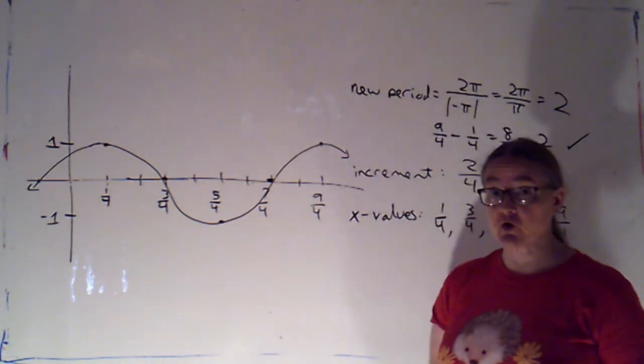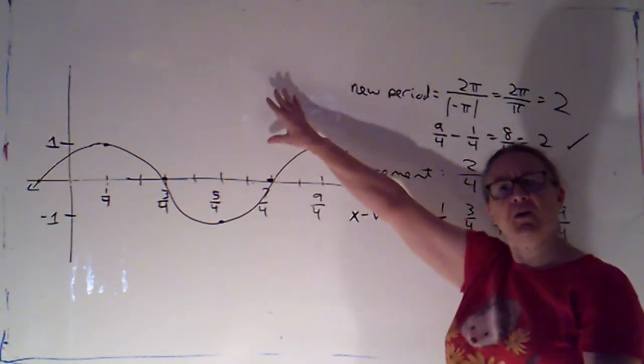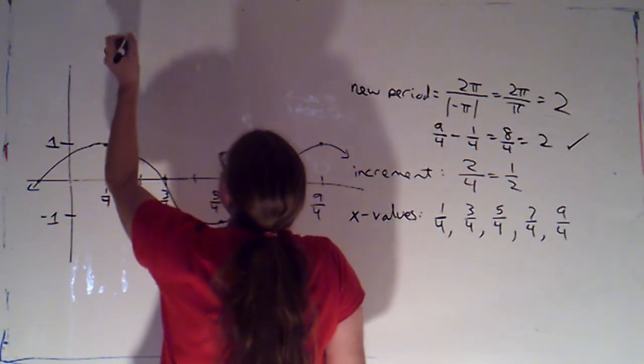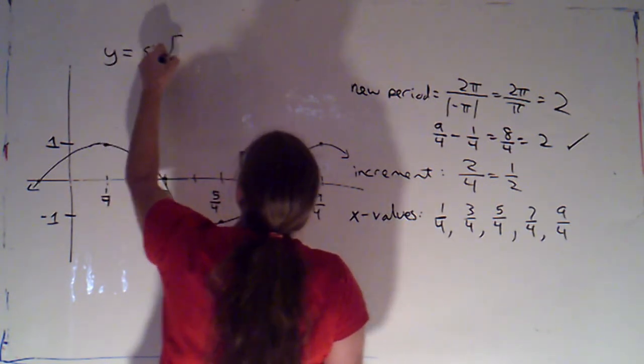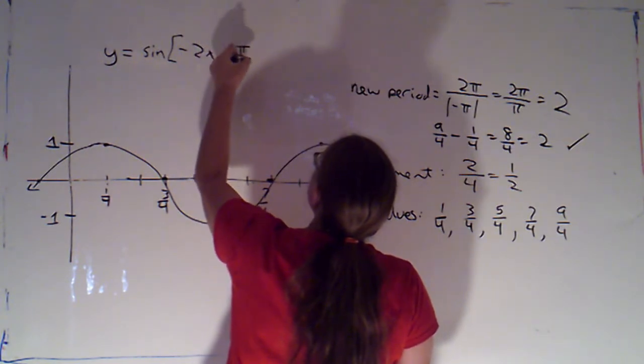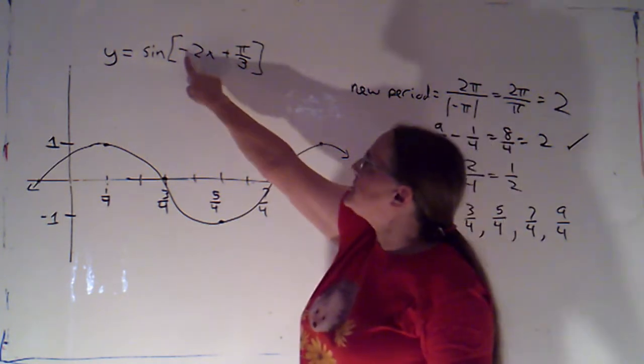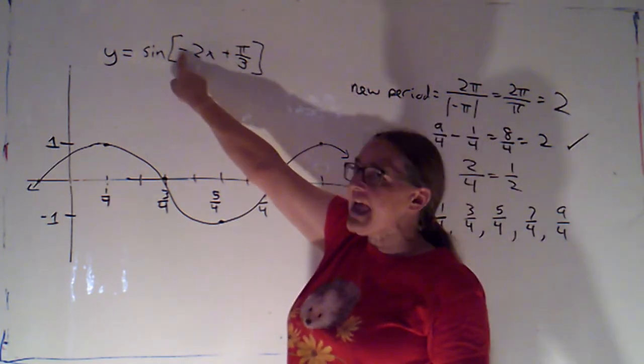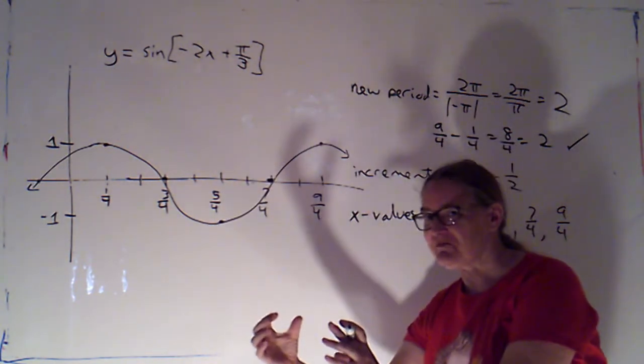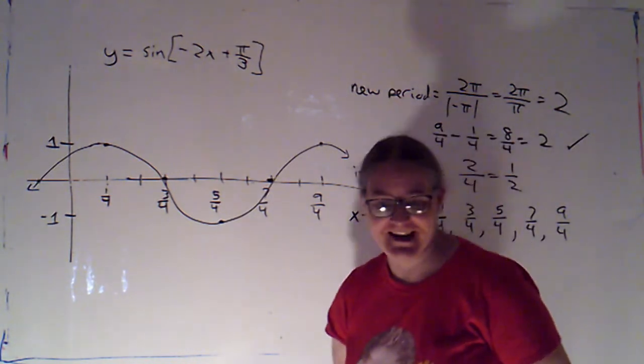I'm going to have you folks try one. So, we're going to end this video now, but let me put up the problem on the board. Try to work it out before you tune into the next video. And we'll go over it then. So, let's try y is equal to sine of negative 2x plus pi over 3. So, see if you can graph that. Just a word of caution. You've got a negative here. Remember, sine is odd. So, with sine, opposite input leads to opposite output. So, try and graph that. We'll go over it together in the next video.